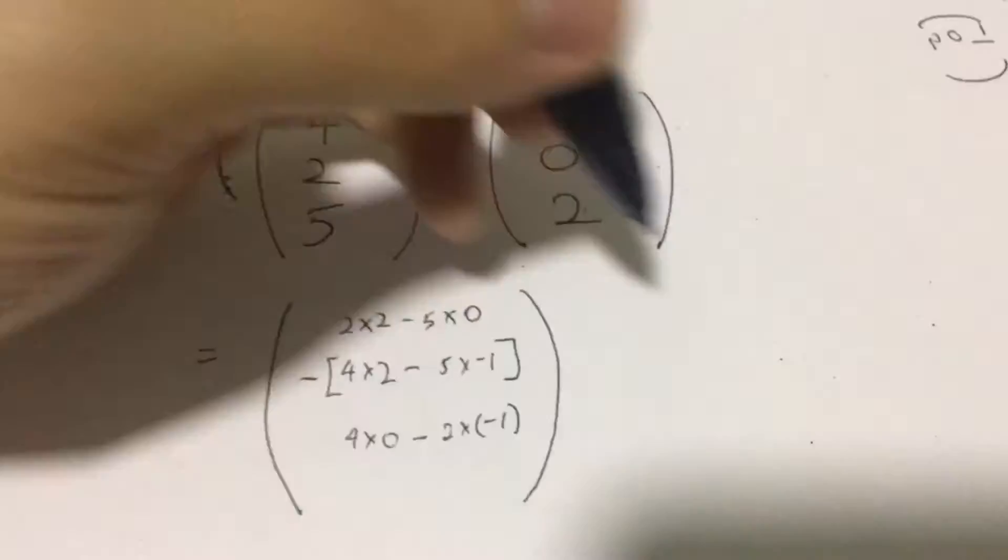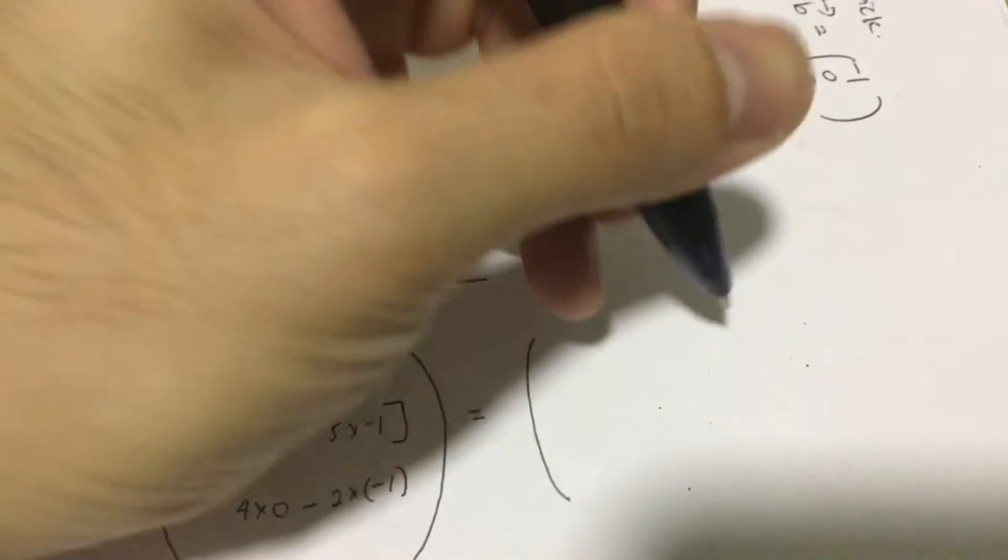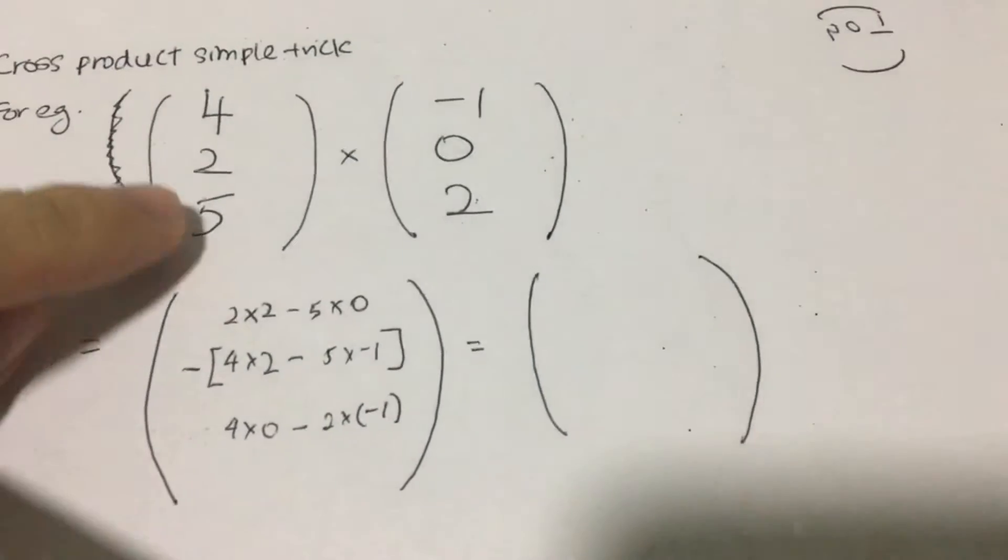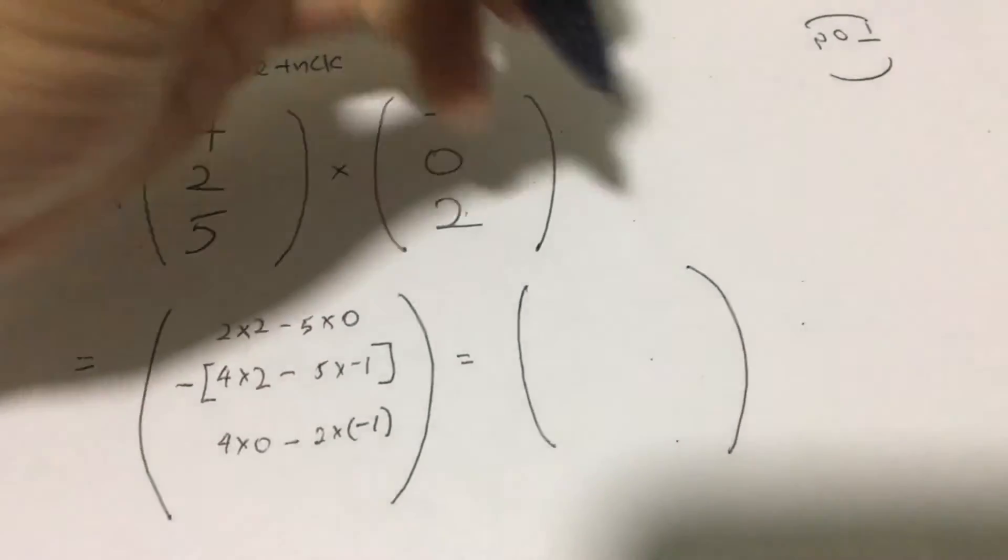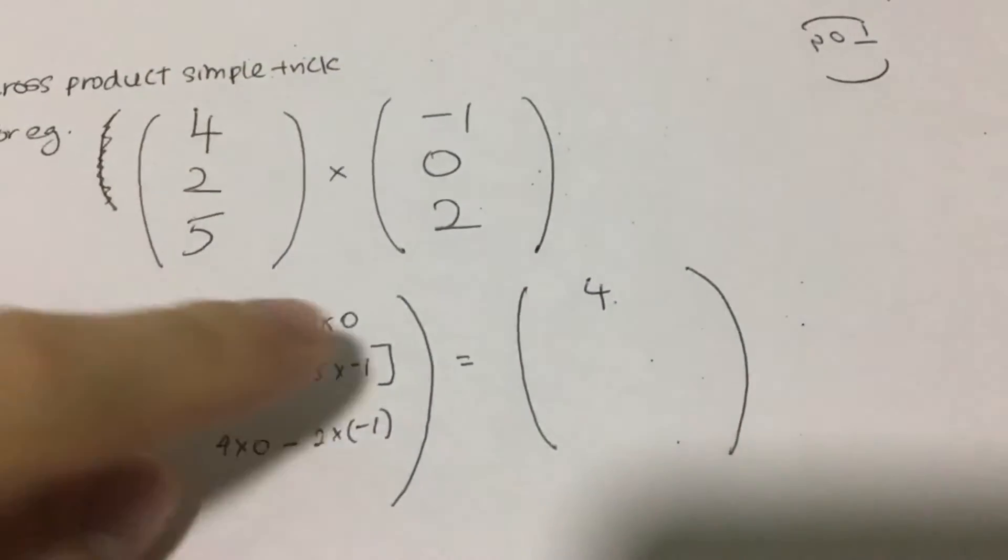Then after that, you solve the whole problem itself. So 2 times 2 is 4, minus 5 times 0 is 0. So that will be 4 minus 0 is 4.